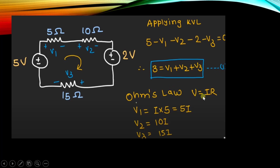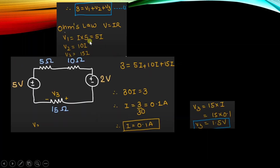According to Ohm's law, V equals IR. So V1 equals 5I, V2 equals 10I, and V3 equals 15I. Substituting these into equation 1: 3 equals 5I plus 10I plus 15I, meaning 30I equals 3. From here we find I equals 0.1 ampere. The total current flowing in this circuit is 0.1 ampere.